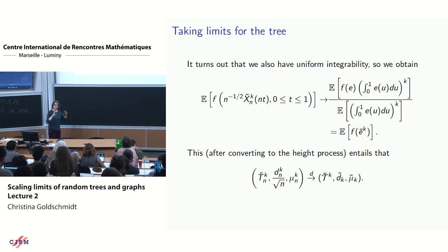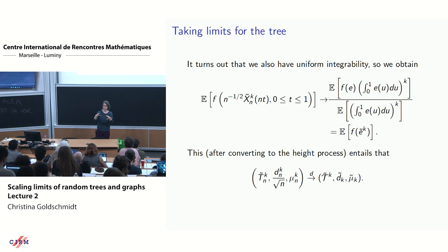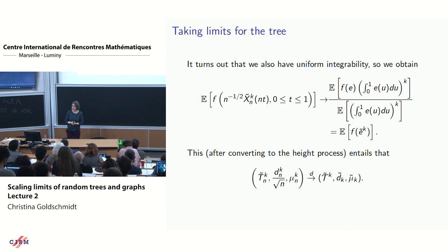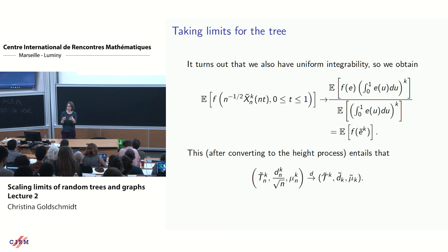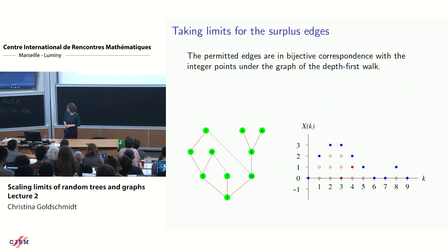Once we have the depth-first exploration tool at our disposal, we deduce convergence of the tree in the Gromov–Hausdorff–Prokhorov sense. The permitted edges are in bijective correspondence with integer points under the depth-first walk, so choosing a uniform k-subset of permitted edges converges to choosing k points uniformly under the area of the excursion — confirming the limit description and explaining how surplus edges appear as Poisson points in Aldous's picture.